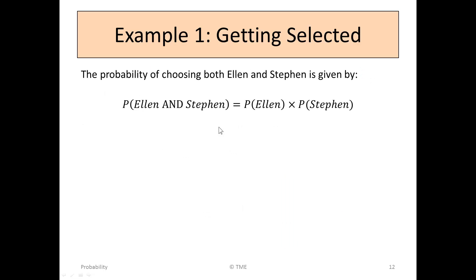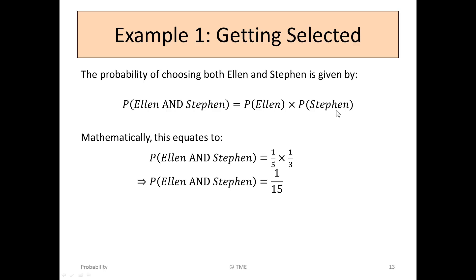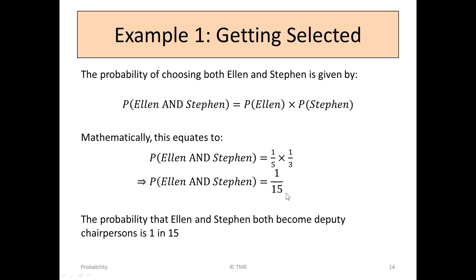The probability of choosing both Ellen and Stephen is given by the probability of Ellen and Stephen. And in this case, because they're independent, that's the probability of Ellen multiplied by the probability of Stephen. This equates mathematically to 1 over 5 times 1 over 3, or 1 over 15. So in words, the probability that Ellen and Stephen both become deputy chairpersons is 1 in 15.